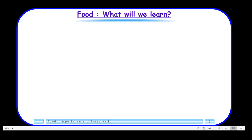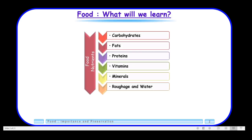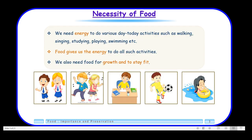So what we will learn here is about food nutrients. Since all these names are new to you, I will simply read them out. First is carbohydrates, then we have fats, proteins, vitamins, minerals, roughage, and water. But before we start discussing about the nutrients and groups, let us understand why do we need food.